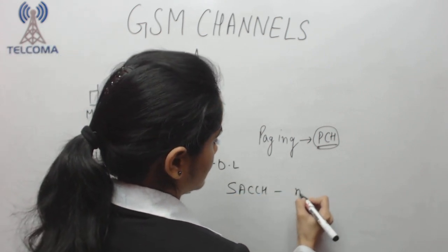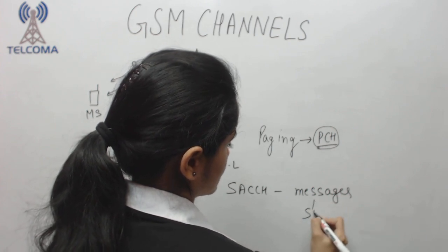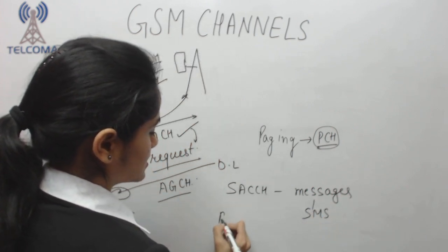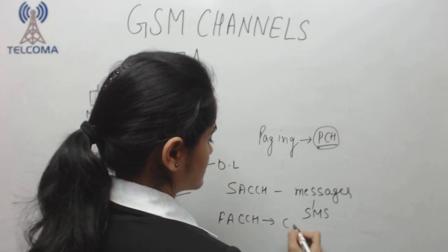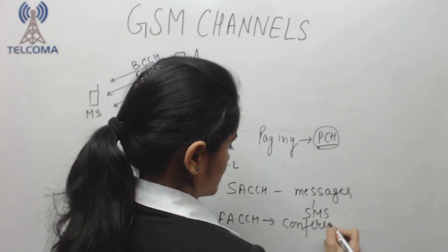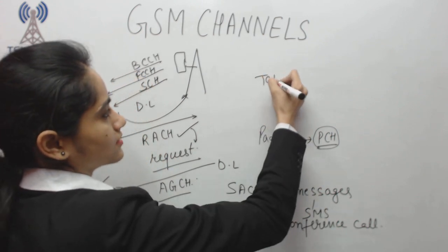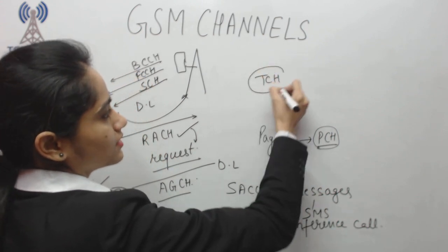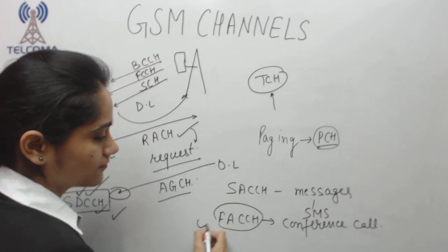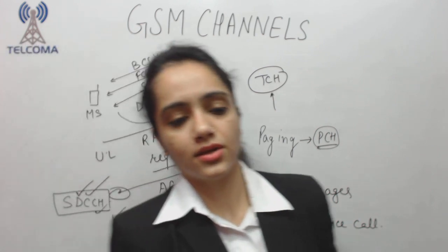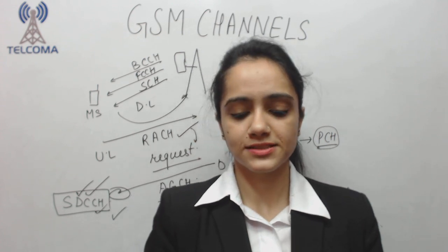SACCH, the Slow Associated Control Channel, carries all messages such as SMS. FACCH, the Fast Associated Control Channel, is used for conference calls — when two people are communicating on a traffic channel and a third person needs to be added, FACCH handles that signaling. This concludes the description of GSM channels. Thank you.